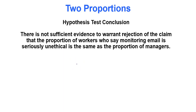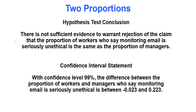For the hypothesis test: there is not sufficient evidence to warrant rejection of the claim that the proportion of workers who say monitoring email is seriously unethical is the same as the proportion of managers. The sentence structure can be found in the module 7 table with four rows. For the confidence interval: with 99% confidence, the difference between the proportion of workers and managers who say monitoring email is seriously unethical is between negative 0.023 and 0.223.